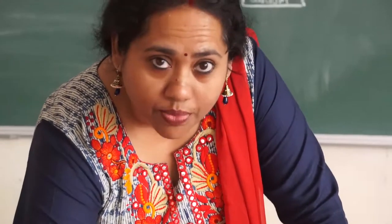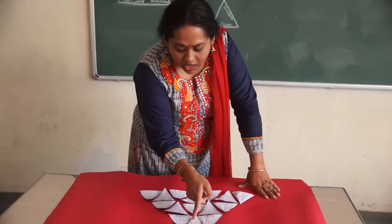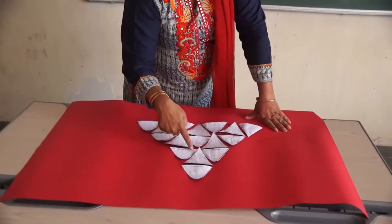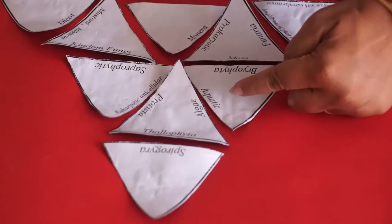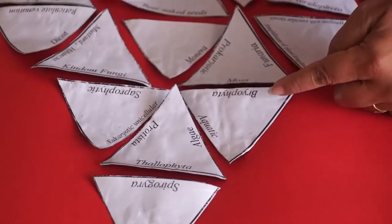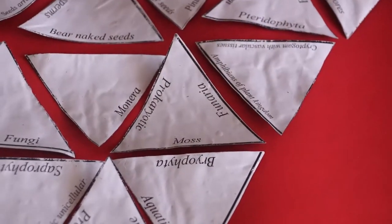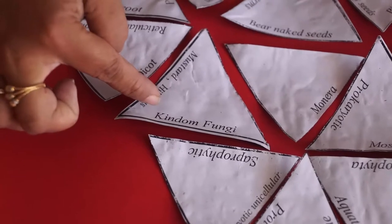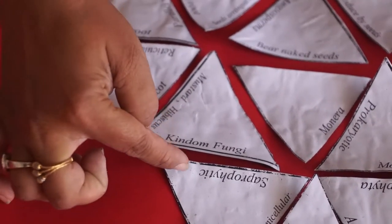So here, Spirogyra is an example of Thylophyta. Here it is Protista — Protista is Eukaryotic and Unicellular. Here it is Algae — Algae is Aquatic. Bryophyta — example of Bryophyta is Moss. Then here is Saprophytic, and here it is Kingdom Fungi — Kingdom Fungi is Saprophytic.